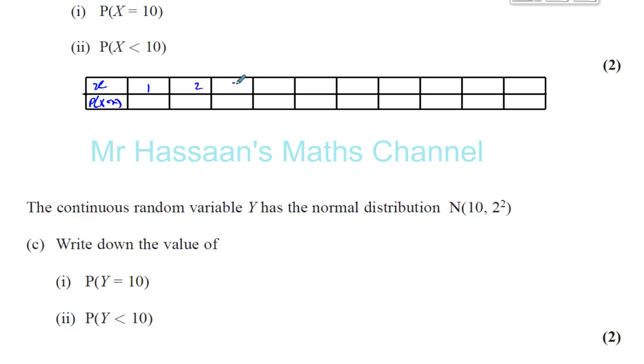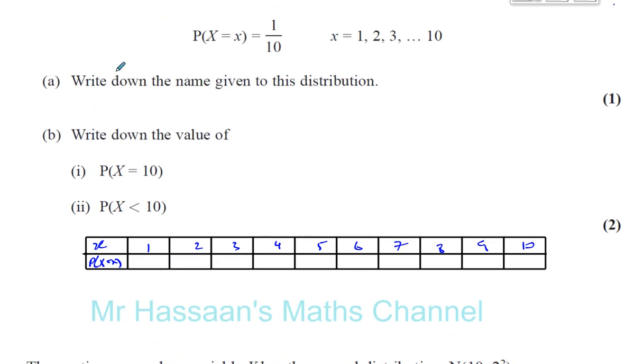It would look something like this. You'll have X and the probability that X equals x. You'll have 1, 2, 3, 4, 5, 6, 7, 8, 9, and 10. And each of these probabilities will be the same, 1 tenth.